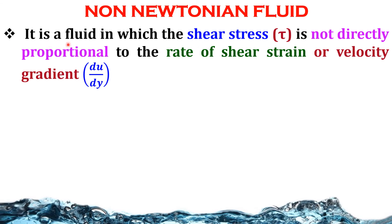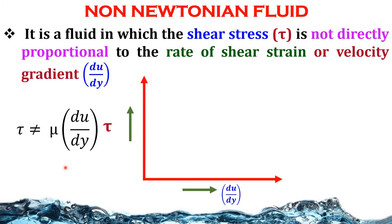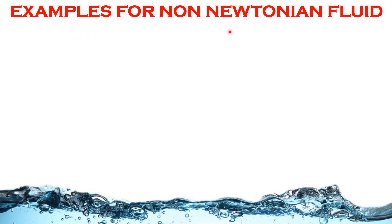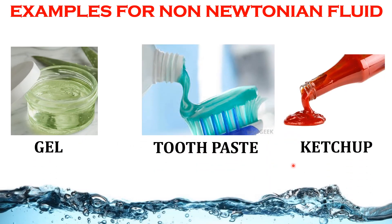Non-Newtonian fluid: It is a fluid in which the shear stress is not directly proportional to the rate of shear strain or velocity gradient — tau is not equal to mu times du/dy. When we plot a profile between velocity gradient and shear stress, we get a parabolic path, which indicates that there is no linear relationship between velocity gradient and shear stress. Examples of Non-Newtonian fluids used in day-to-day life are gel, toothpaste, and ketchup.